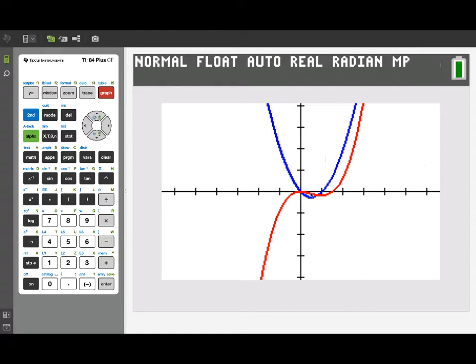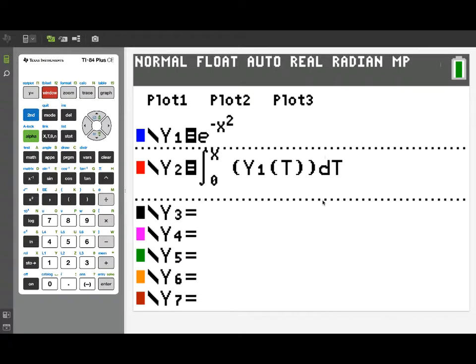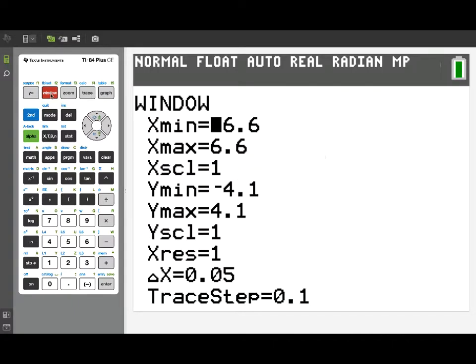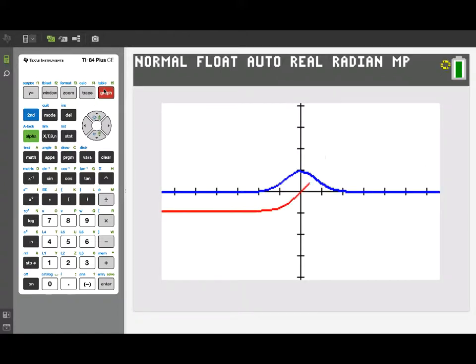Now let's take a look at a function that we can't find an antiderivative for in closed form, e to the minus x squared. We'll still be able to create an antiderivative using the fundamental theorem. Because that definite integral function is being computed for every point, I'm going to speed up the graphing by changing the xres found in the window menu to 5. That means the graph will be plotted for every 5 pixels.